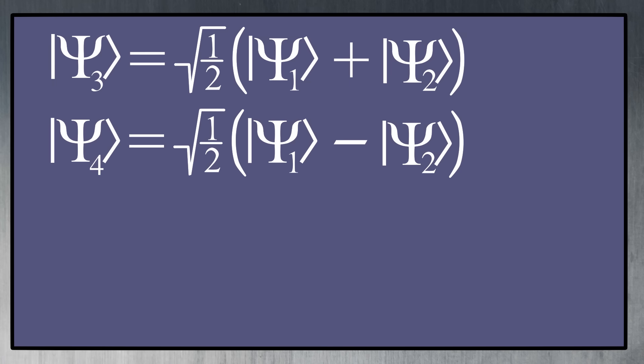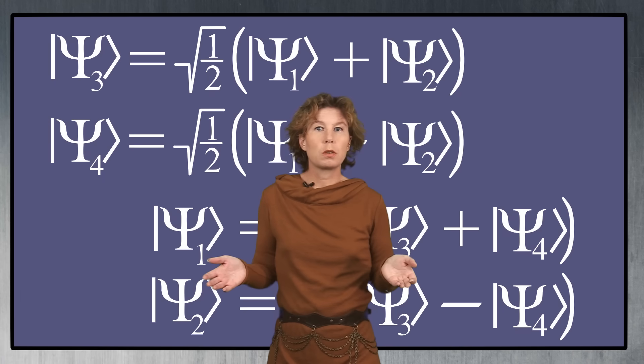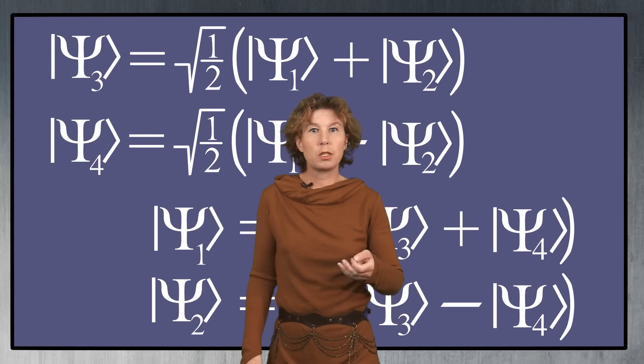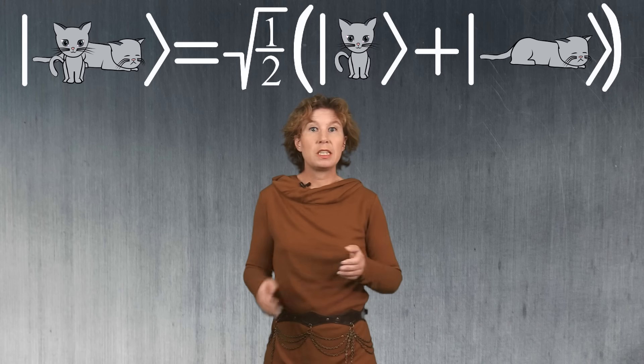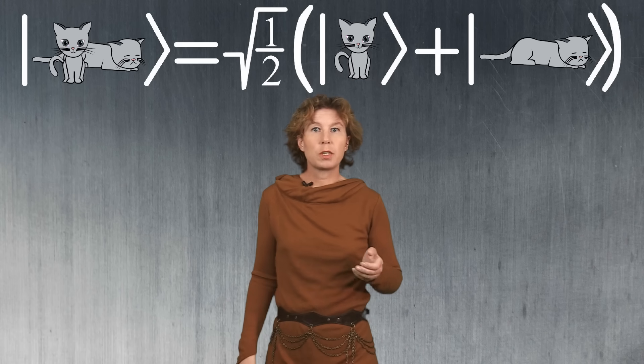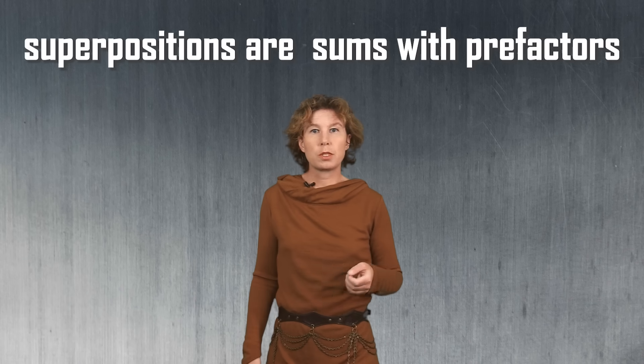But now you can write the original psi 1 and psi 2 as a superposition of psi 3 and psi 4. So which one is a superposition? Well, there is no answer to that — superposition is just not an absolute term. It depends on your choice of a specific set of solutions. You could say, for example, that Schrödinger's cat is not in a superposition of dead and alive, but that it is instead in the non-superposed state dead and alive. And that's mathematically just as good. So superpositions are sums with pre-factors, and it only makes sense to speak about superpositions of something.